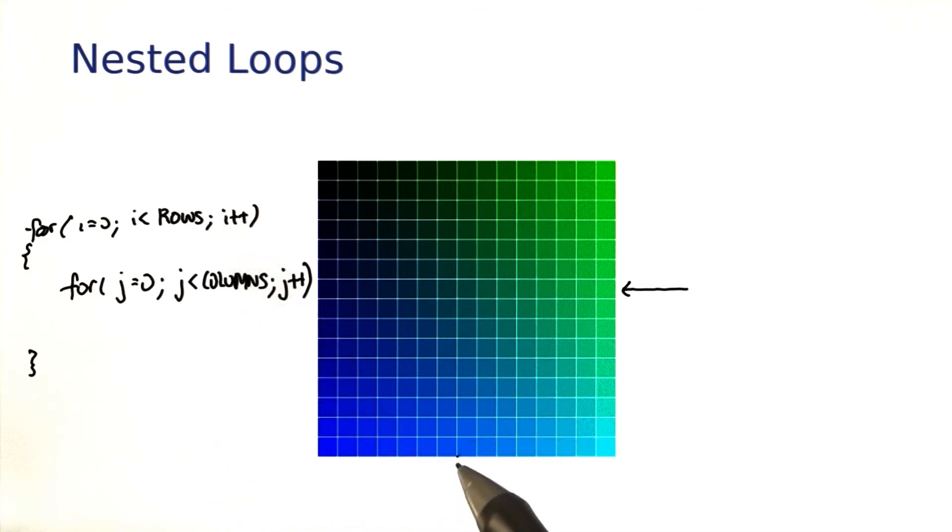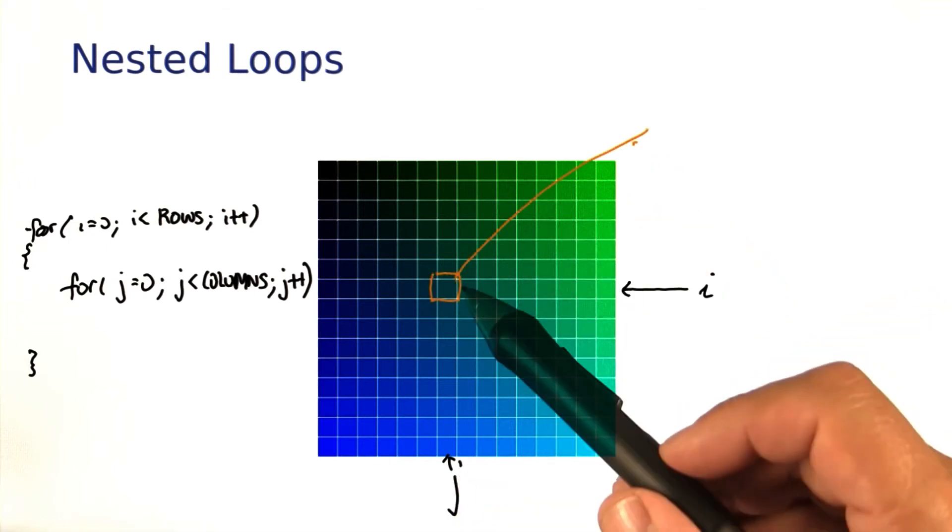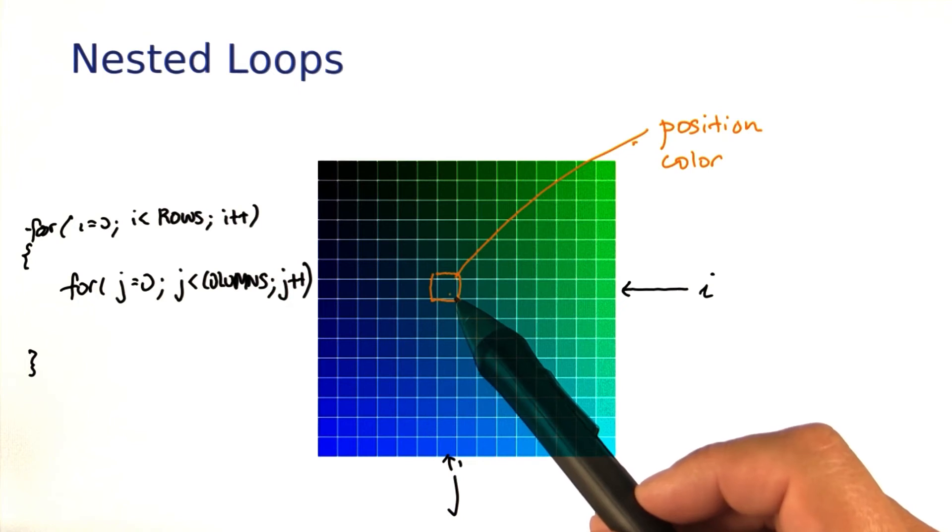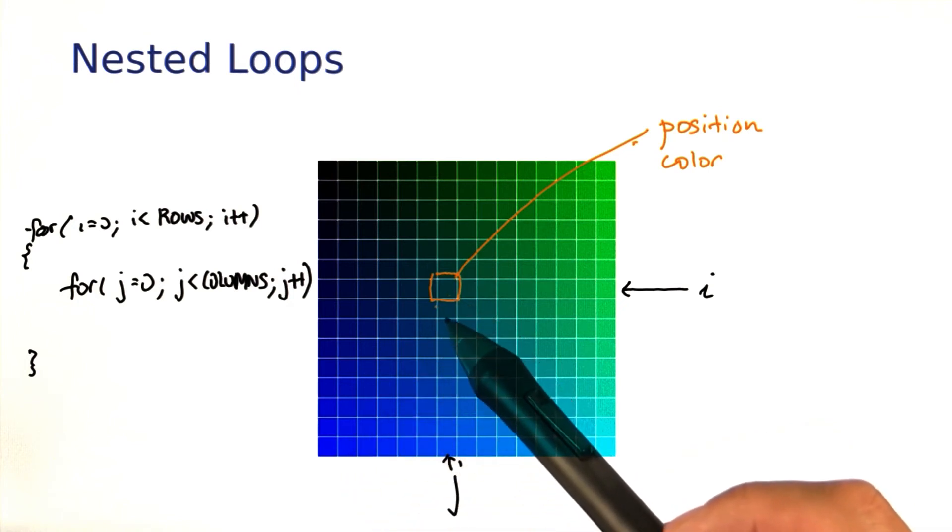Now the only tricky task remains, if I have row i, and column j, how do I find out the position and the color of this square? You'll get to try that out in the next exercise.